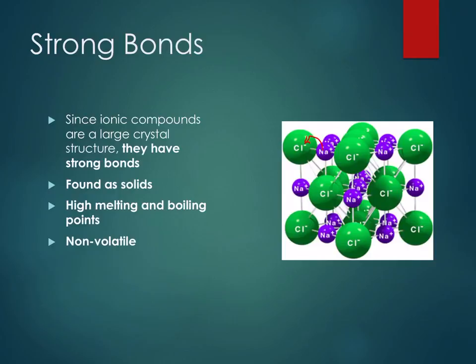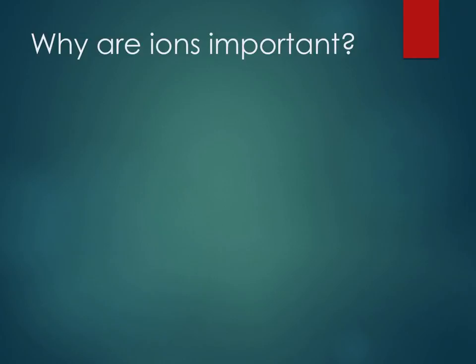Ionic compounds are also non-volatile, meaning they're not going to go from liquid to gas easily. When we talk about covalent bonds you'll see the difference — your water will eventually evaporate and go up into the air, but your salt crystal sitting on the table isn't going to. We touched on this when we talked about thermodynamics and states of matter.